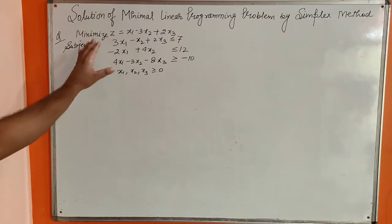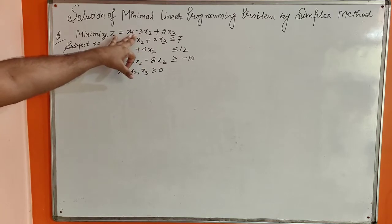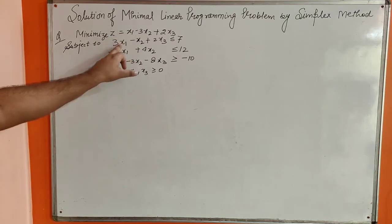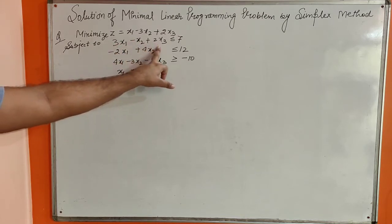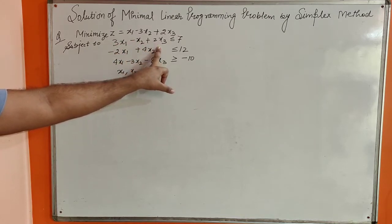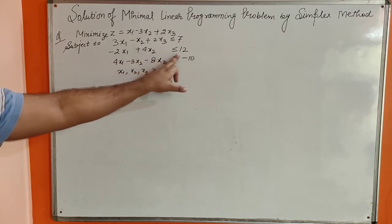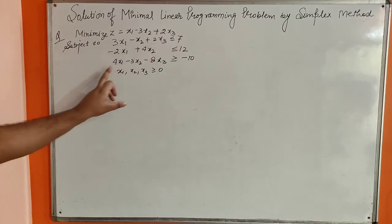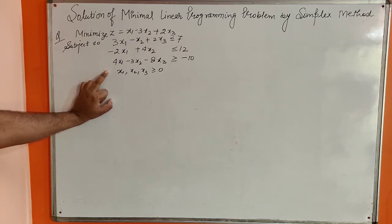The problem is: minimize z equals x1 minus 3x2 plus 2x3, subject to the conditions: 3x1 minus x2 plus 2x3 is less than or equal to 7; minus 2x1 plus 4x2 is less than or equal to 12; and 4x1 minus 3x2 minus 8x3 is greater than or equal to minus 10; with x1, x2, x3 greater than or equal to 0.